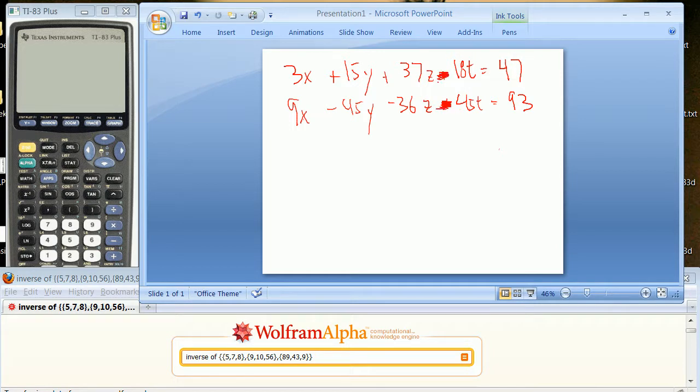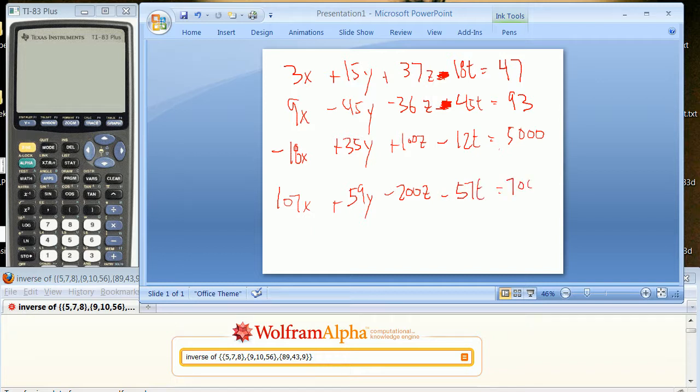And then I'm going to say minus 18x plus 35y plus 100z minus 12t equals 5,000. And finally, 107x plus 59y minus 200z minus 57t equals 7,000.